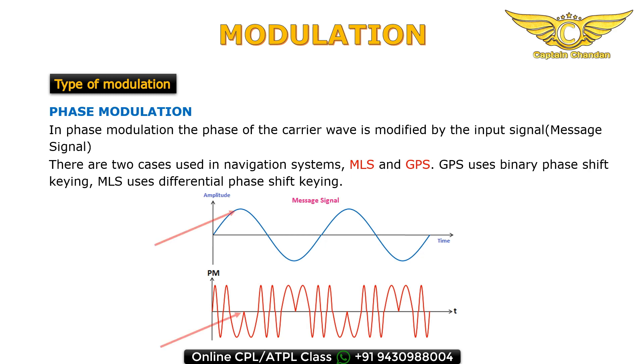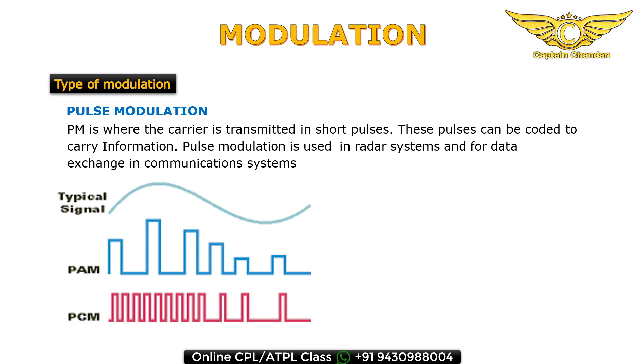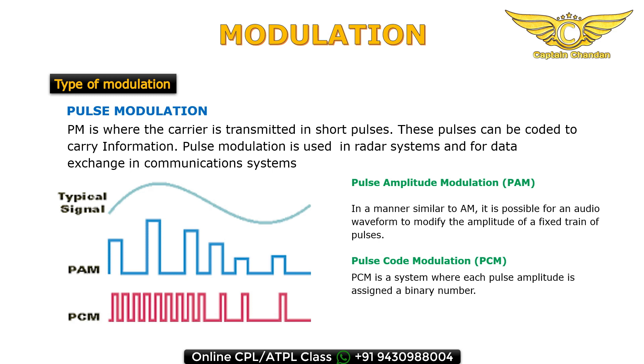Pulse modulation is where the carrier is transmitted in short pulses and these pulses carry the information. This technique is used in radar systems and data exchange in communication systems. We will know two types: pulse amplitude modulation, where pulses vary according to amplitude of the audio signal, and pulse code modulation, where each pulse amplitude is assigned a binary number.